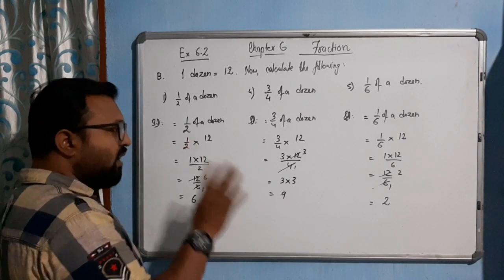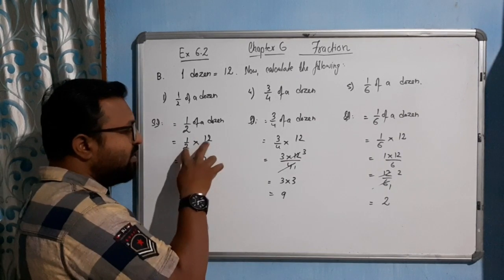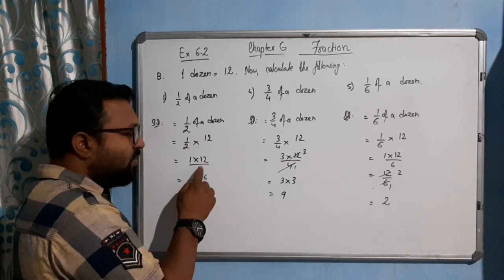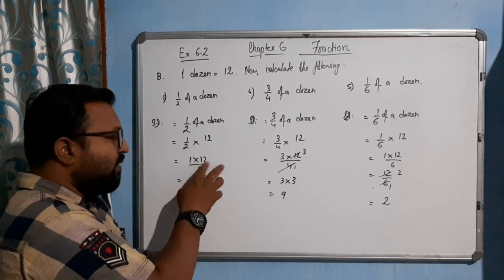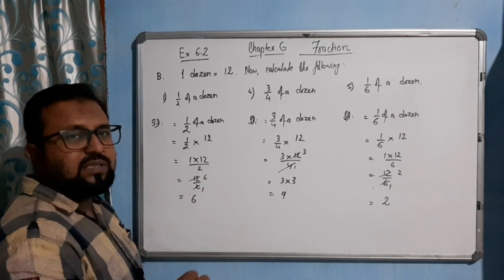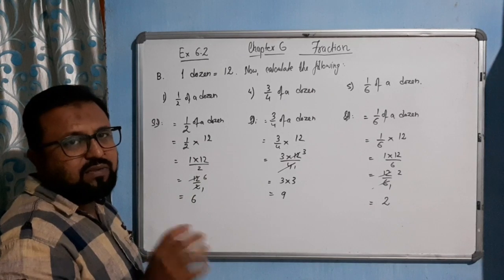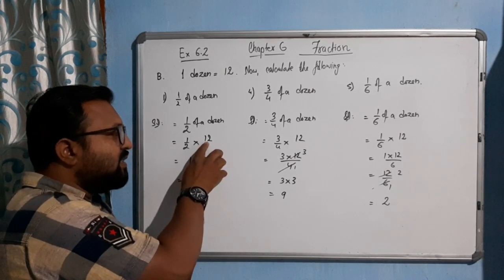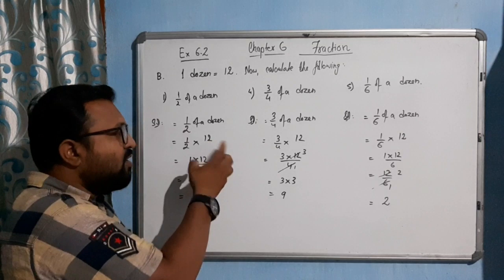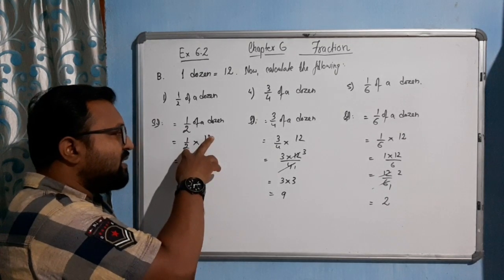And see, you can again, once again, you can cancel it out here itself. But why am I writing like this, 1 into 12 by 2? Because most of the students do mistakes. What they think, that this thing is in numerator place or denominator place.